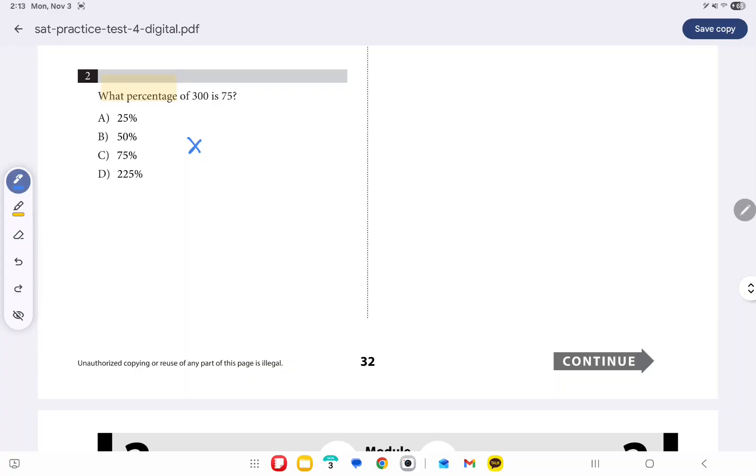And so we'll say X of, in this case here, is multiplication, 300 is, means equals, and then we have 75. So now we have an equation, and we're trying to solve for X. Whenever we have an equation and we're trying to solve for X, we want to get X by itself.